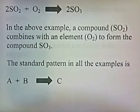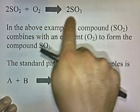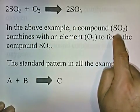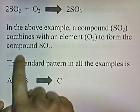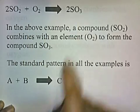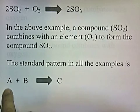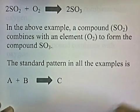Here's another example. We have a compound and an element combining to form another compound. In the above example, a compound SO2 combines with an element, O2, to form the compound SO3. So the standard pattern in all the examples is two things combining to form one thing.